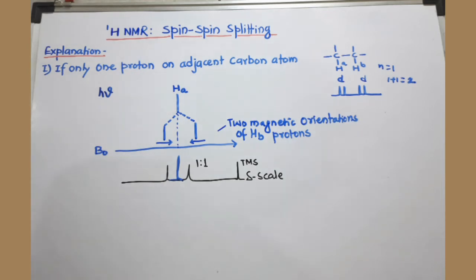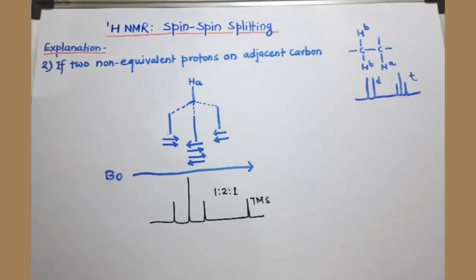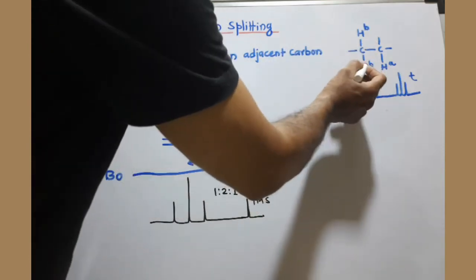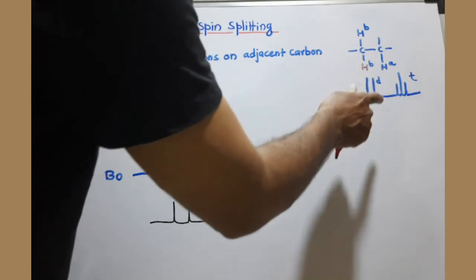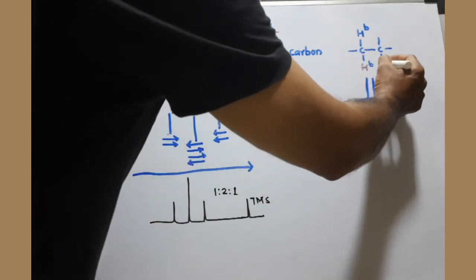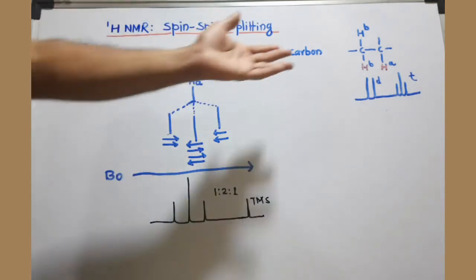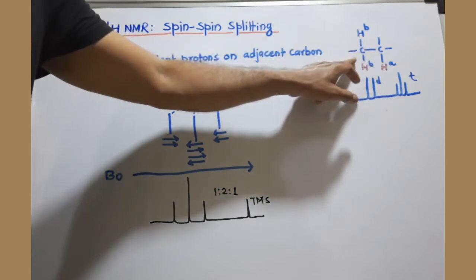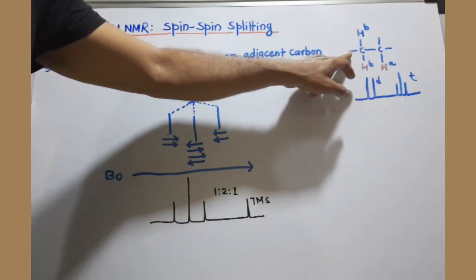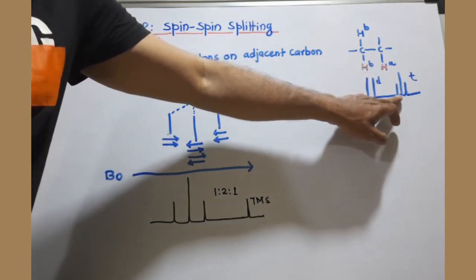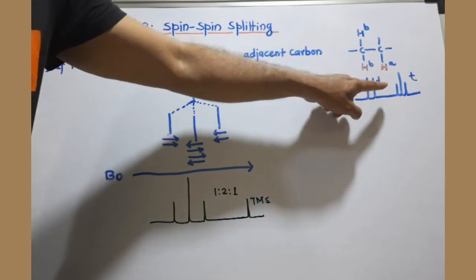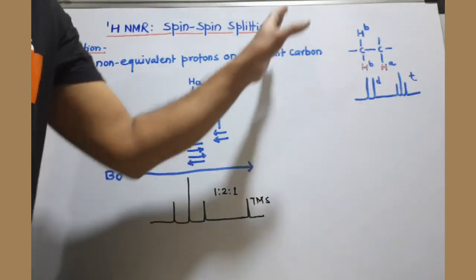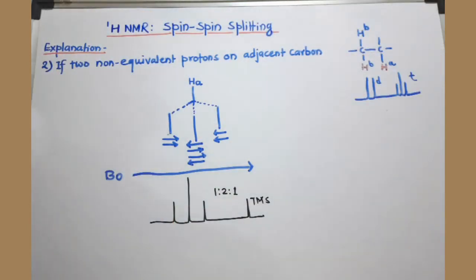If there are two non-equivalent protons on the adjacent carbon, we consider the splitting pattern for HA. By our rules, if HA has two adjacent protons, N value is 2, so 2 plus 1 equals 3 — we get a triplet in the ratio 1:2:1. For the B proton, there is just one proton on the adjacent carbon, so N equals 1, giving 1 plus 1 equals 2 — a doublet. This is consistent with the rules we have learned.